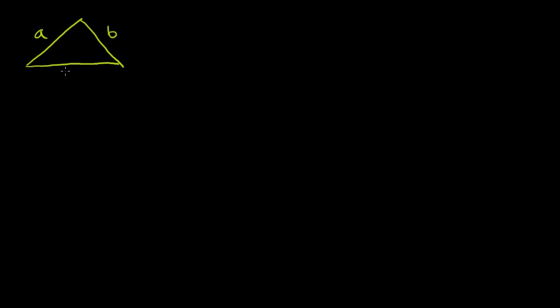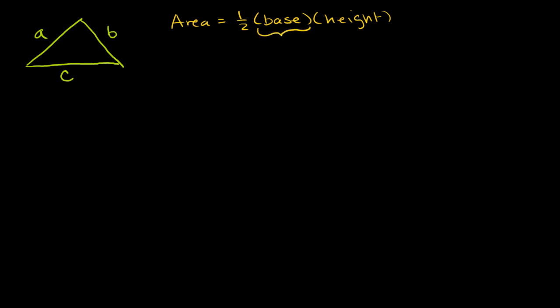Let's say I've got a triangle. I only know the lengths of the sides of the triangle. This side has length a, this side has length b, and that side has length c. I'm asked to find the area of that triangle. So far, all I'm equipped with is the idea that the area of a triangle is equal to one half times the base times the height. The base of this triangle would be side c, but the height we don't know — that h right there. So the question is, how do we figure out the area of this triangle?